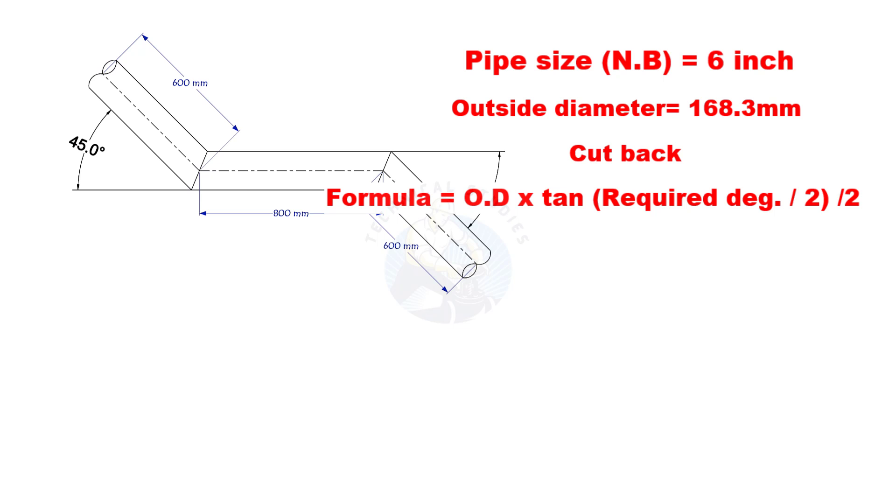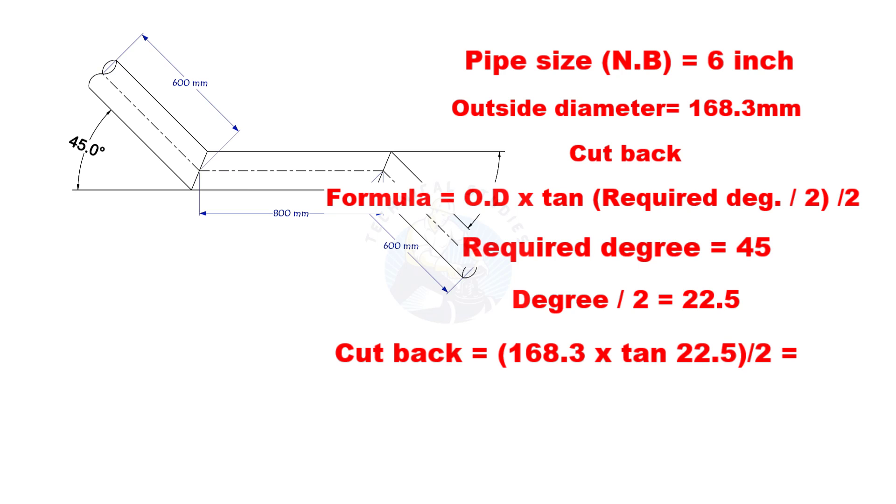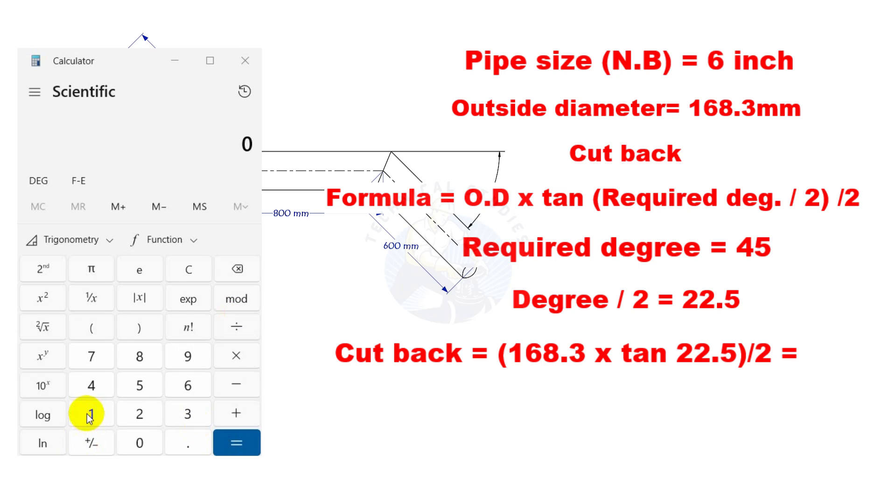Cutback is O.D. multiplied by tan half degree, divided by 2. Here, the required degree is 45. Half of 45 is 22.5. Let us calculate. The cutback is nearly 35 millimeters.